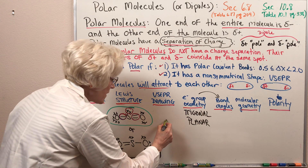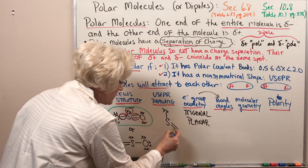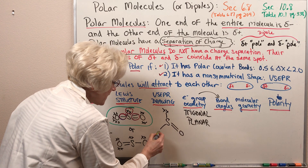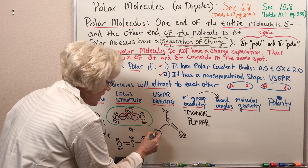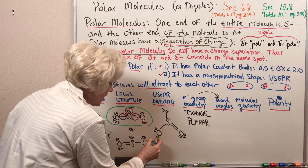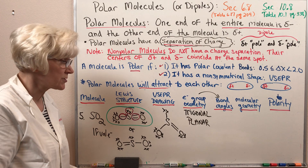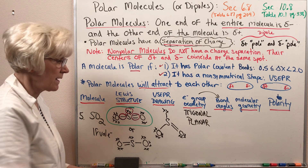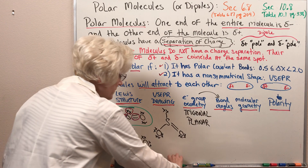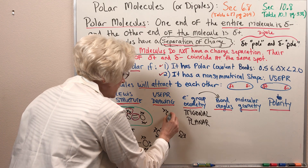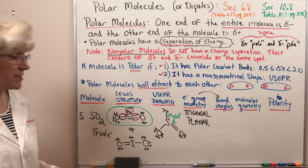If there are three electron groups present, then those electron groups, in order to maximize their distance apart because of electron-electron repulsion, will assume a trigonal planar geometry — as we saw in the previous example with formaldehyde. So I can redraw the sulfur dioxide molecule showing its trigonal planar electron group geometry.